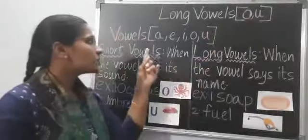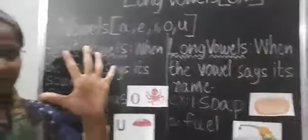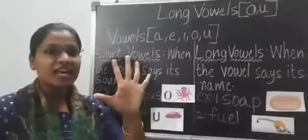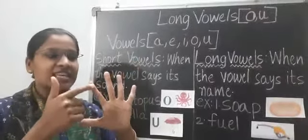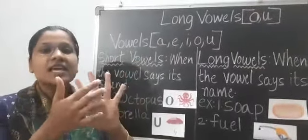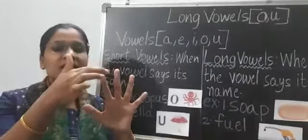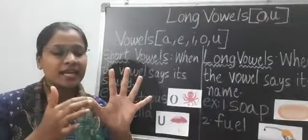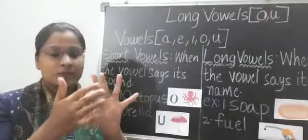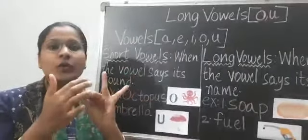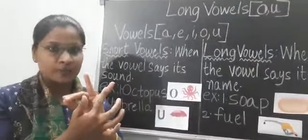So how many vowels do we have, children? Five. What are they? A, E, I, O, U. So previously we have learnt A, E, I. Now we are going to learn O and U.